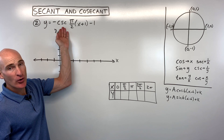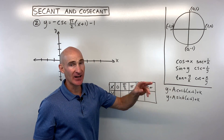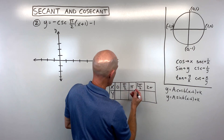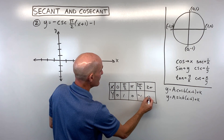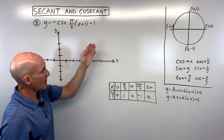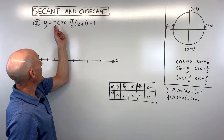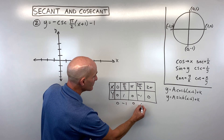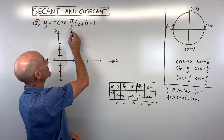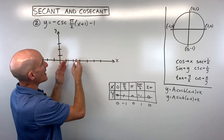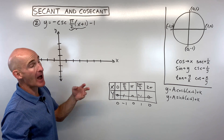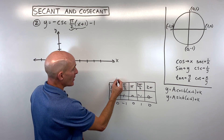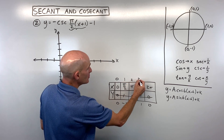Because we're graphing cosecant, we look at the sine graph first since sine and cosecant are reciprocals. On the unit circle, sine is the y-coordinate, so our basic values are 0, 1, 0, −1, 0. The a-value is −1, which reflects over the x-axis — we multiply all y-values by −1. Then the b-value of π/2 affects horizontal direction; grouped with x, we use the reciprocal 2/π, multiplying all x-values: 0, 1, 2, 3, 4.